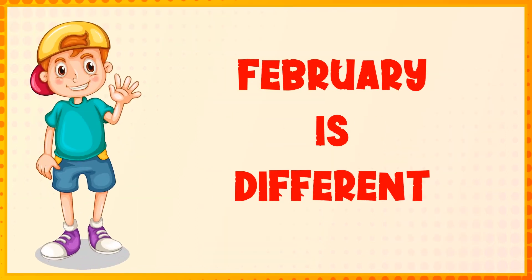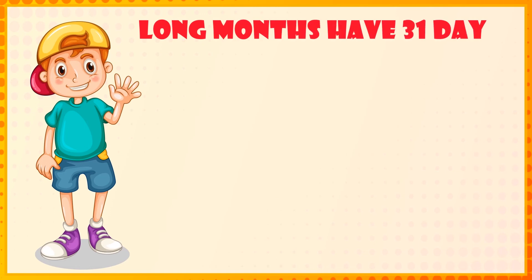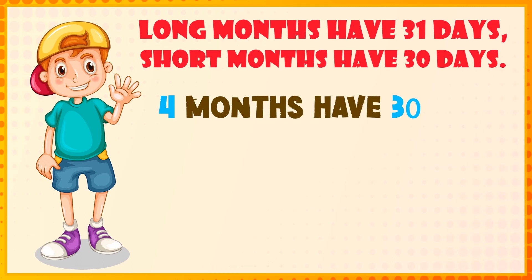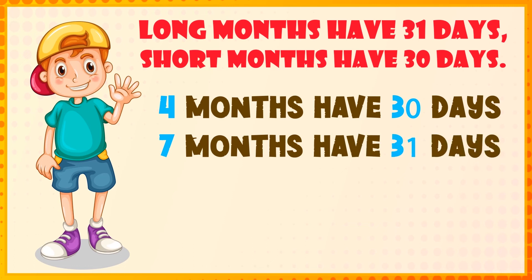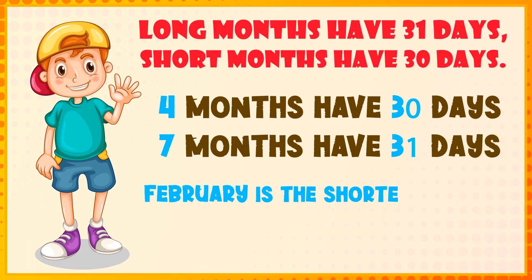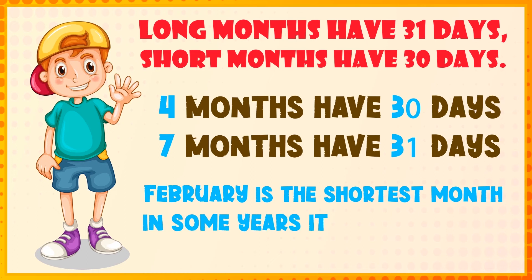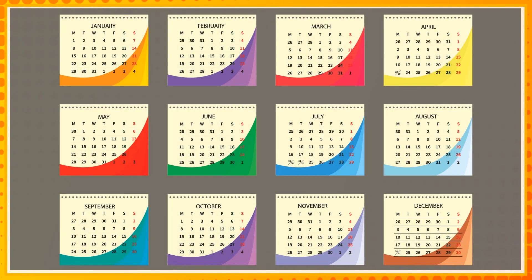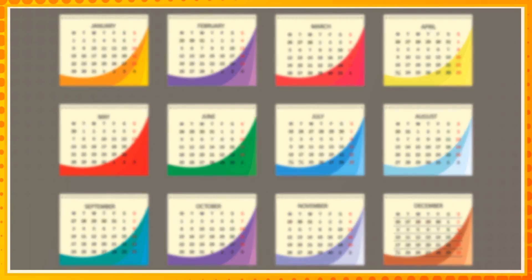February is different! Long months have 31 days. Short months have 30 days — four months have 30 days. Seven months have 31 days. February is the shortest month; in some years it jumps for fun. Look at a calendar to find out which months have 30 days: April, June, September, and November.